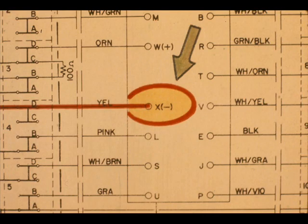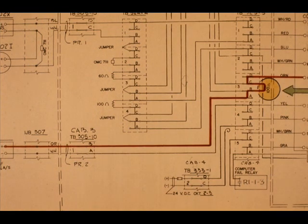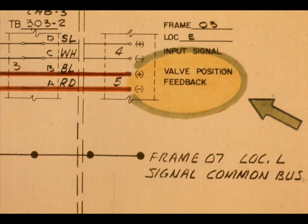The 10 to 50 milliamp controller output current signal flows from pin X of the controller through the I-to-P transducer, through a 100 ohm resistor to pin W of the controller. A 1 to 5 volt signal develops across the 100 ohm resistor. The computer senses this signal. This signal is called valve position feedback.